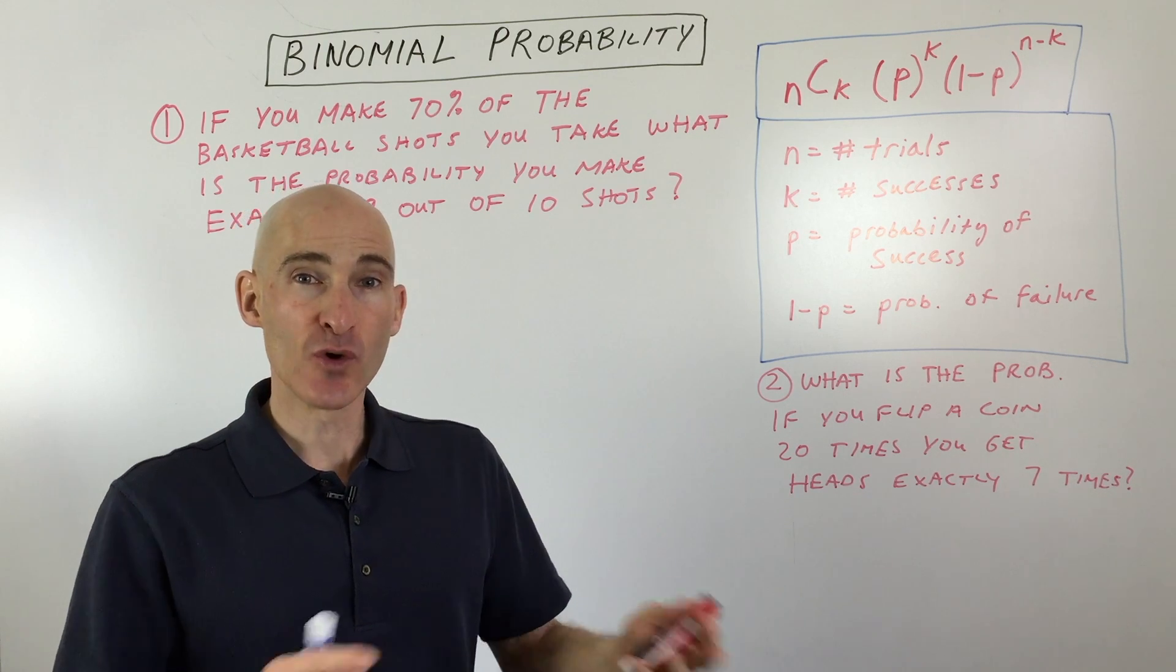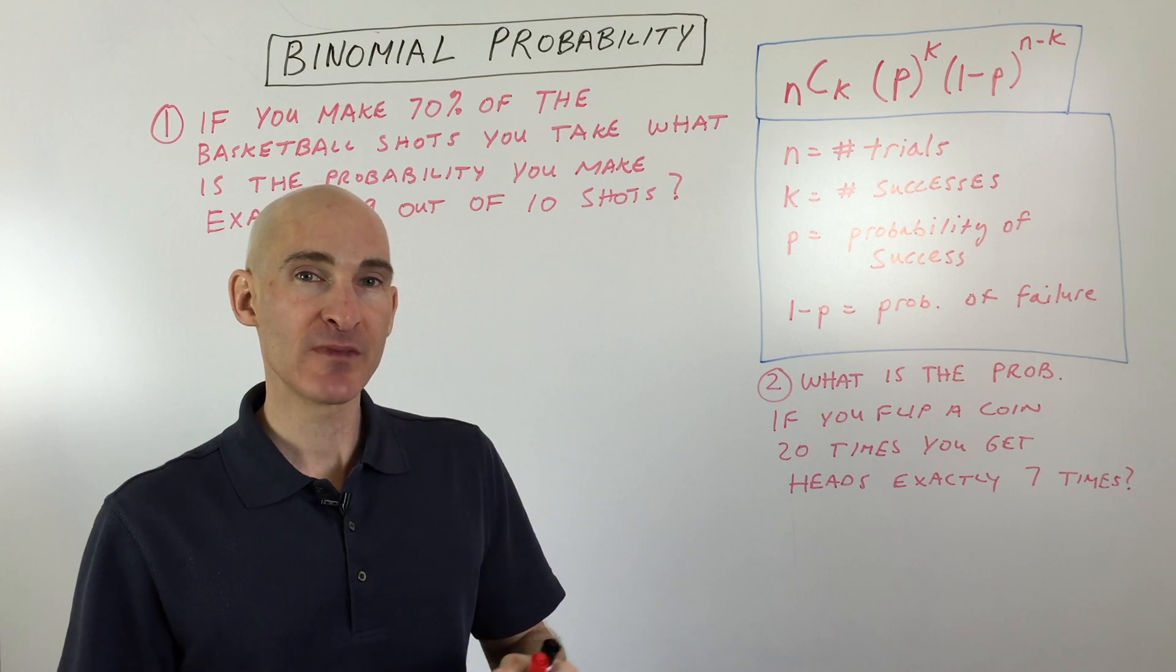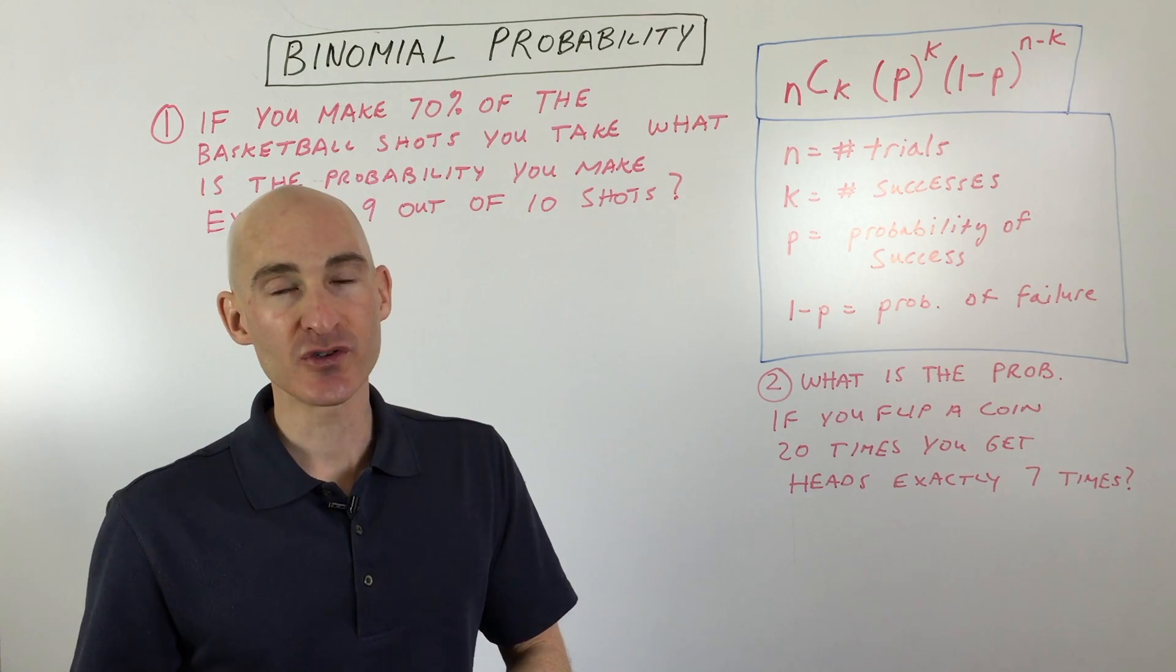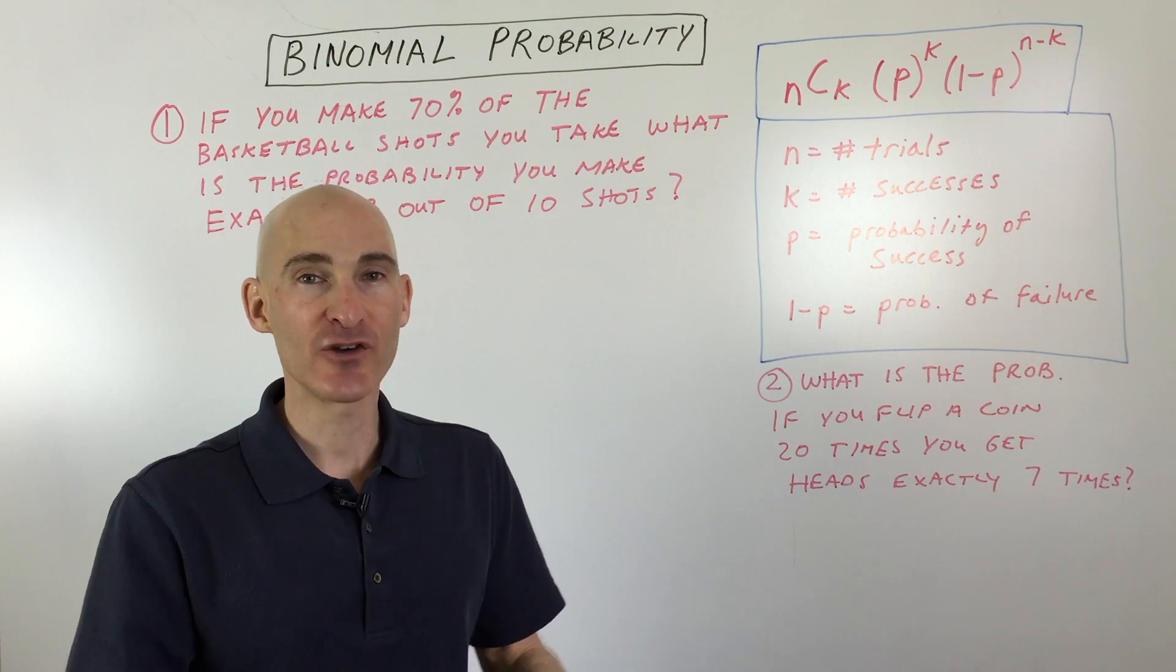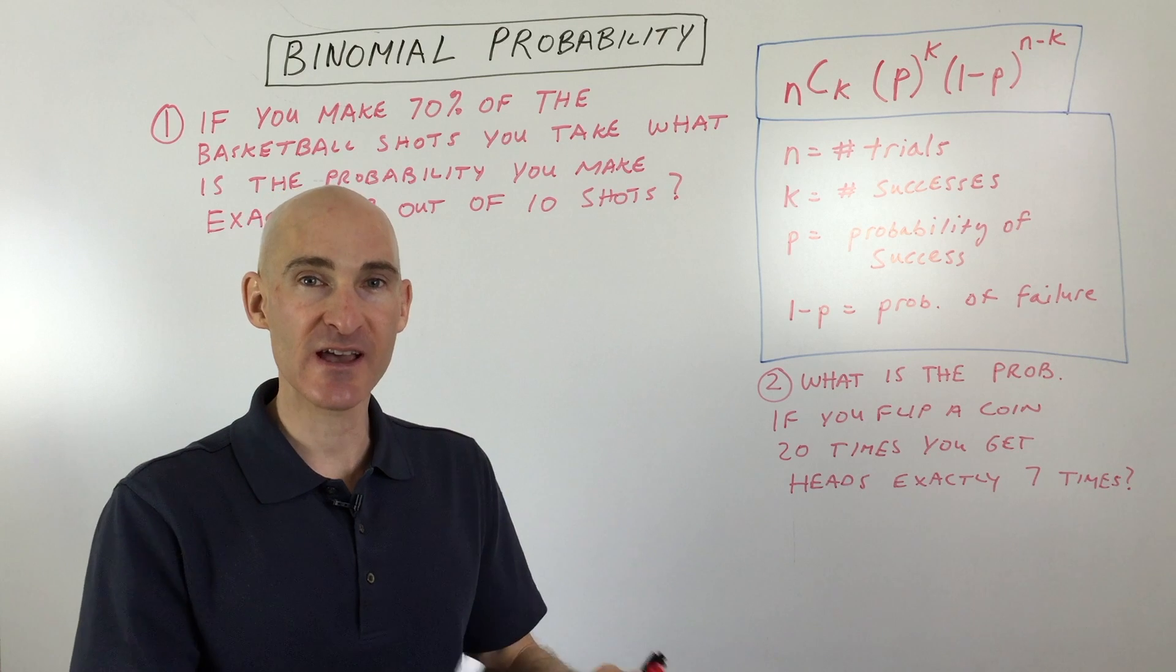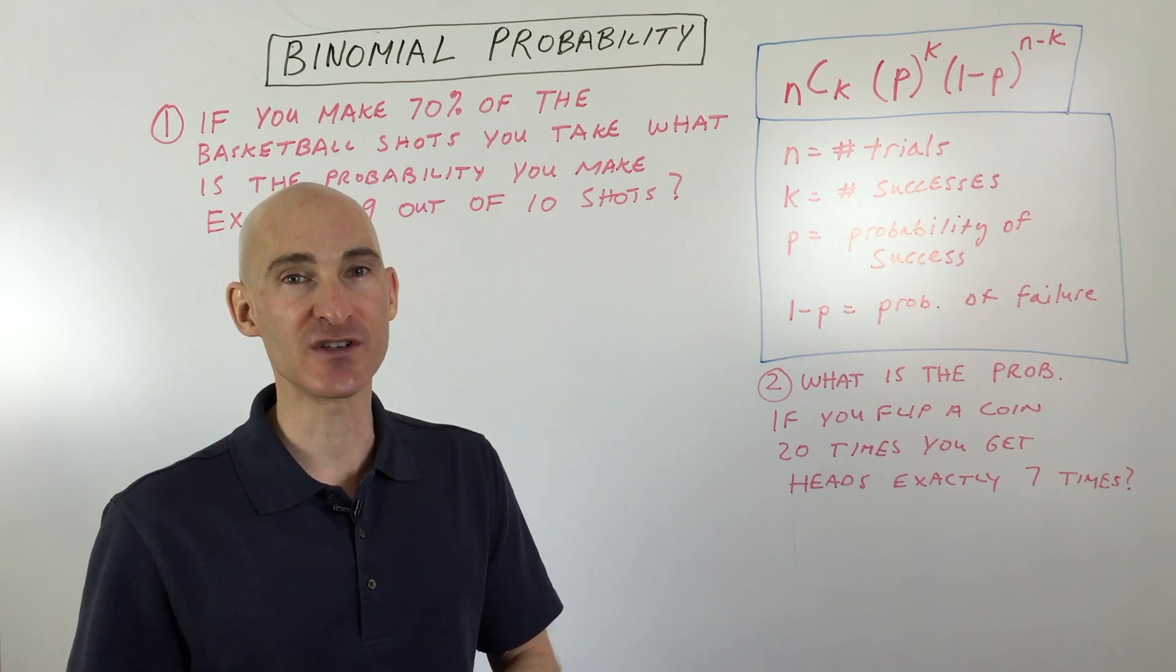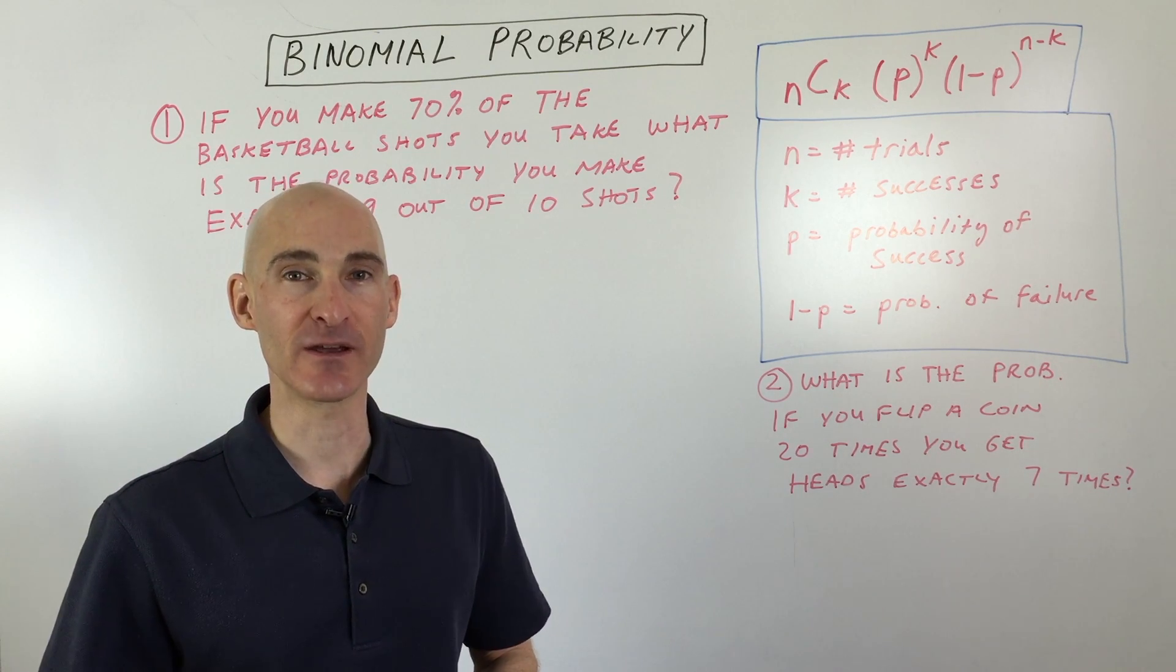Binomial probability basically means that there's only two things that can happen, like either you win or you lose, you make the shot or you miss the shot, or it's like success or failure. It's like one of two options, heads or tails, that kind of thing.